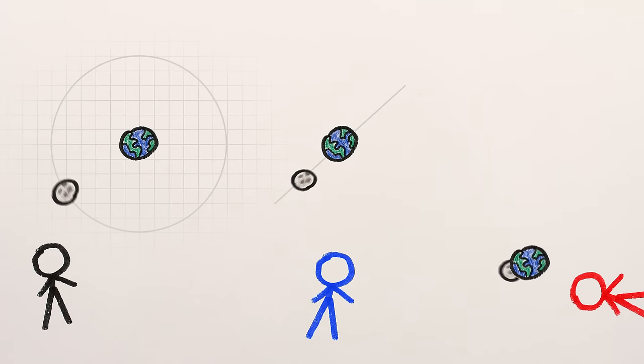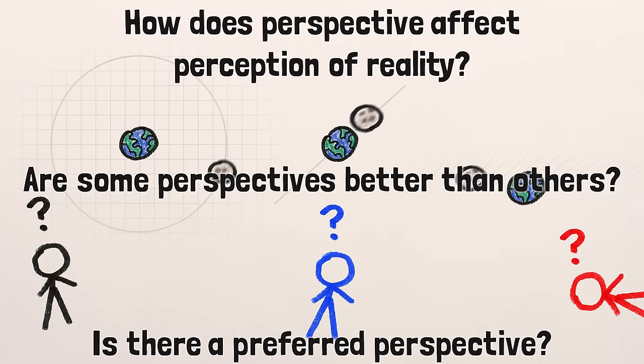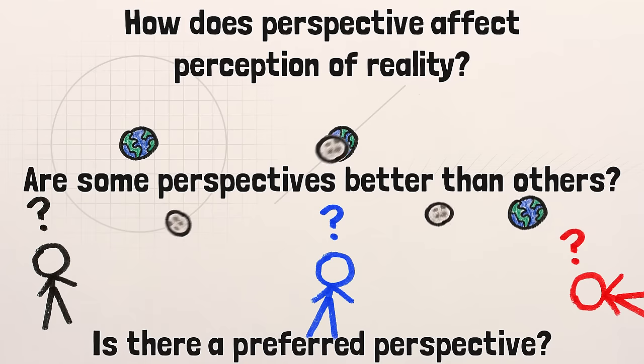But if the motion of the Earth and Moon can be described in such different ways, what does any one of these descriptions actually tell us about the Earth and Moon? Is one of them right and the others wrong? Is there some preferred perspective for observing the Earth and Moon that gets the closest to the true description of what's happening?